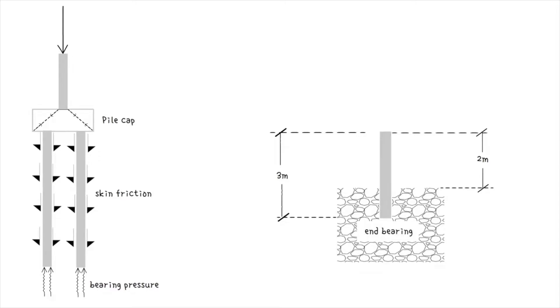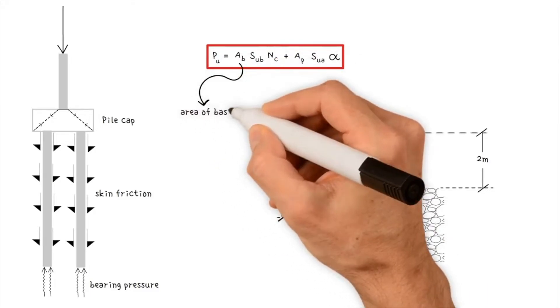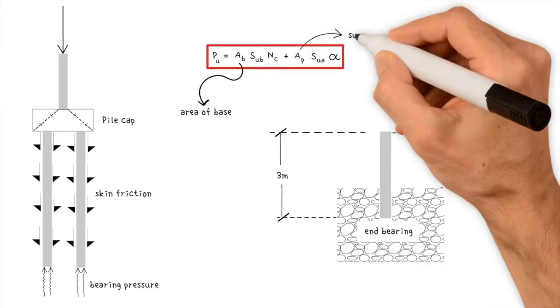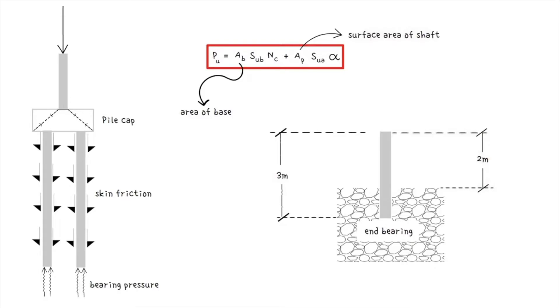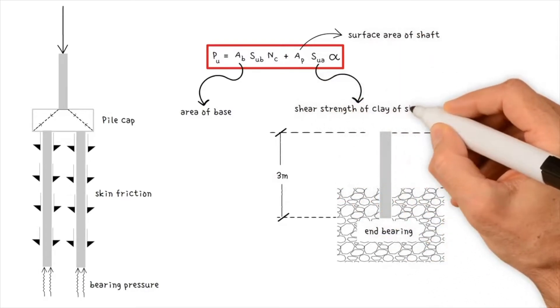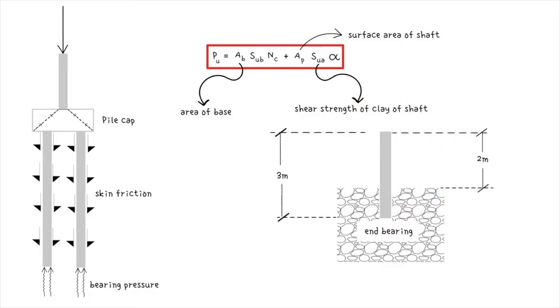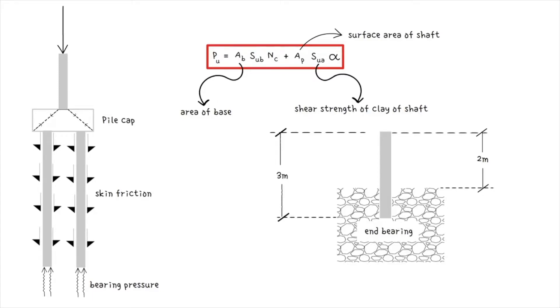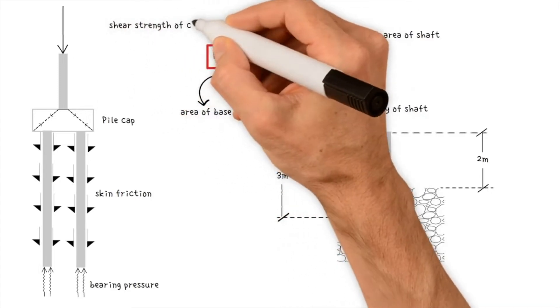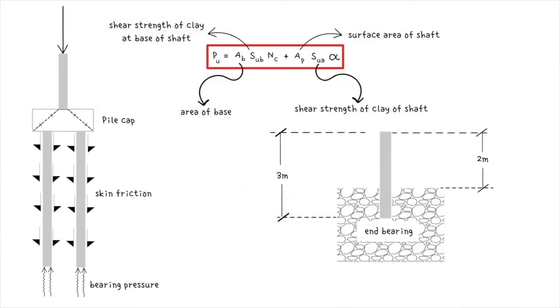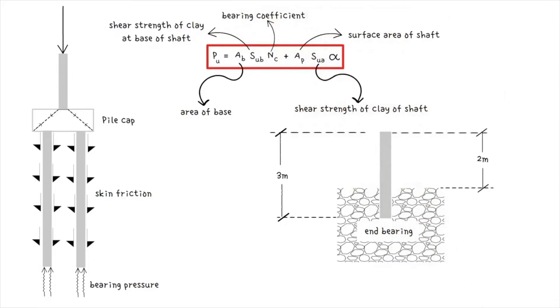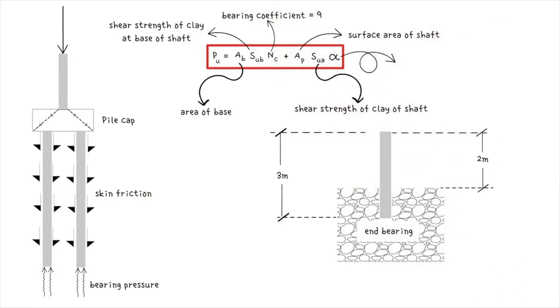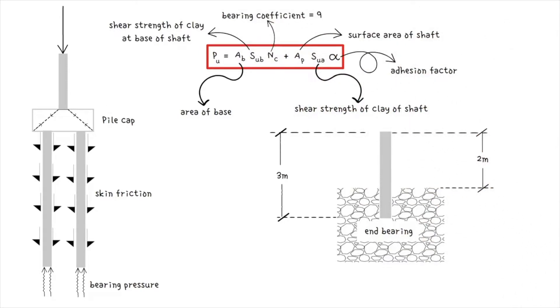Now we'll use a simple formula to determine the ultimate pile capacity in undrained soils. AB is the area of base. AP is the surface area of shaft. SUA is the shear strength of soil around the shaft. This can vary and can be summed in discrete lengths based on site investigation data. SUB is undrained shear strength of soil at the base of the shaft. And C is bearing coefficient, commonly 9. Alpha is the adhesion factor, commonly 0.45 in the absence of data.